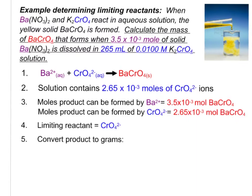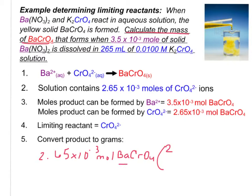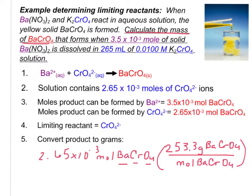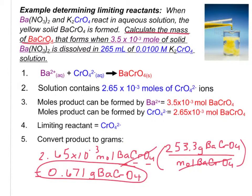The problem asks us to calculate the mass of barium chromate, so let's convert our moles: 2.65 times 10 to the negative 3 moles of barium chromate, multiplied by the molar mass. Adding the molar mass of barium, chromium, and 4 oxygens together gives 253.3 grams of barium chromate per mole. The moles of barium chromate cancel out, and the answer is 0.671 grams of barium chromate produced.